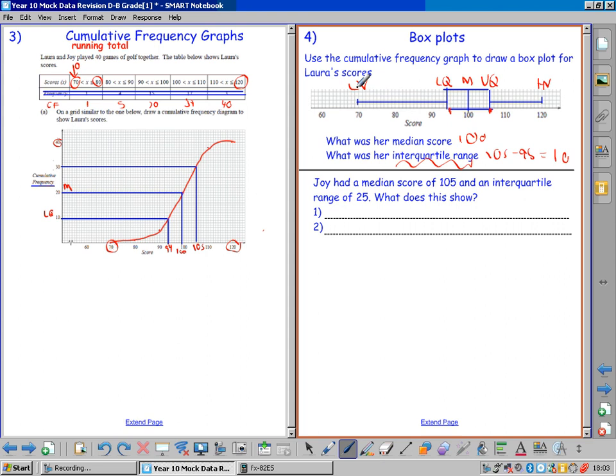Joy was the other person who played the golf, and she had a different median score and a different interquartile range. A higher median score means that, on average, a median is an average. You compare the medians. On average, Joy took more shots. She had a higher median score. And you would say, because her median is 105 and Laura's median was 100. You would complete the sentence.